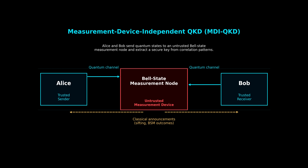The detectors no longer need to be trusted because security comes from the correlations produced by the Bell State measurement itself. On the left side, Alice prepares weak coherent pulses or single photon states in randomly chosen bases and sends those states forward along a quantum channel — the cyan arrow moving from Alice into the middle measurement node. On the right side, Bob does exactly the same thing, his quantum states traveling along another quantum channel into the same untrusted node. This is the key architectural shift: Alice and Bob are symmetric senders, and the measurement happens in the middle, not at the receiver's end.